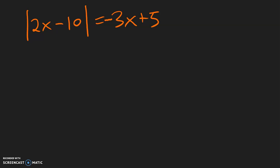In this example, this is the first time we have seen absolute value on one side, but on the other side we have a variable — we have negative 3x plus 5. So pretend this negative 3x does not exist. How will we set this up? We will write the two equations: 2x minus 10 equal to negative 5, or 2x minus 10 equal to positive 5.